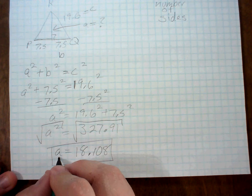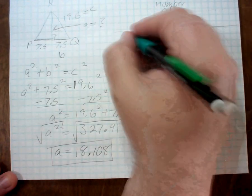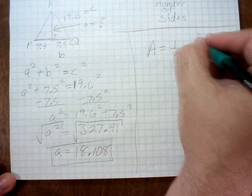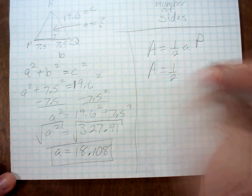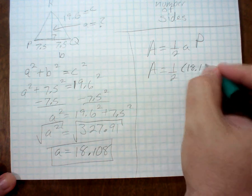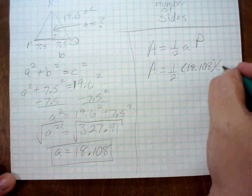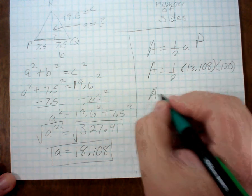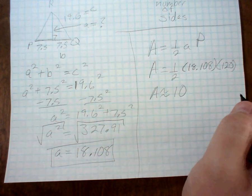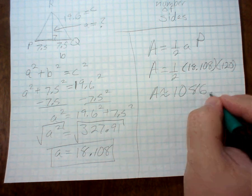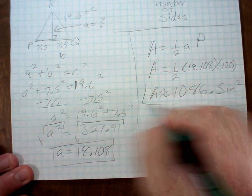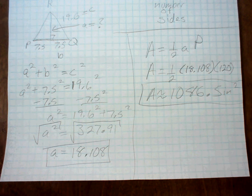So I have my apothem, I have my perimeter. So now to find the area of this thing, I'm going to say 1.5 times the apothem times the perimeter, or the area of this is equal to 1.5 times 18.108 times the perimeter, which is 120. Now if I plug that in the calculator, I get 1,086.5 inches squared. Phew, that was a lot of work.